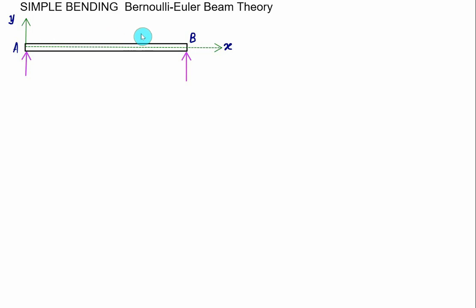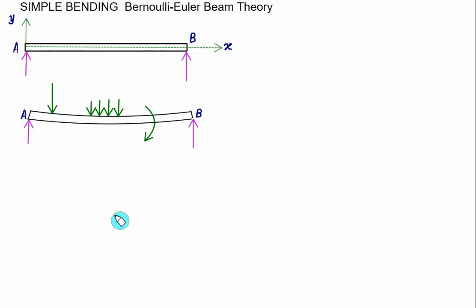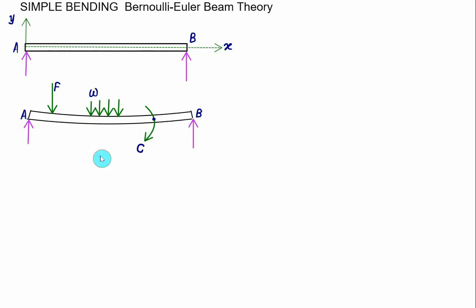When there is no loading, the beam is straight and horizontal on the two supports. Suppose the beam is subjected to a vertical load F, a UDL equal to W, and a couple equal to C. Because of this loading, the beam will bend — it will go into flexion. We show a slight curvature for the beam which was initially horizontal when there was no loading.